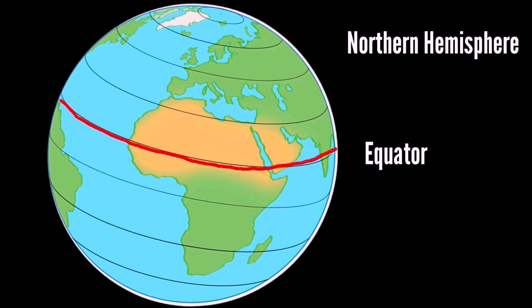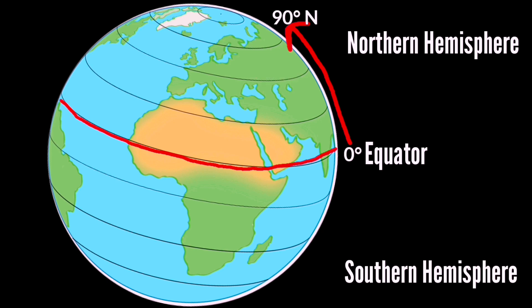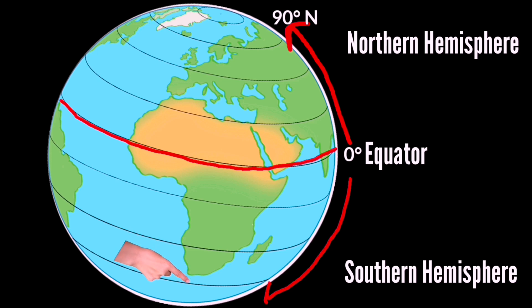The northern hemisphere is an area located from above the equator, which is zero degree latitude, up to the North Pole, which is 90 degrees latitude. While the southern hemisphere is an area located below the equator, up to the South Pole, which is 90 degrees.